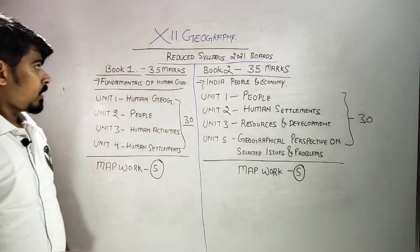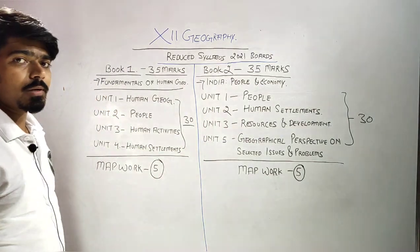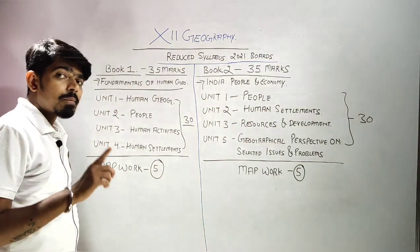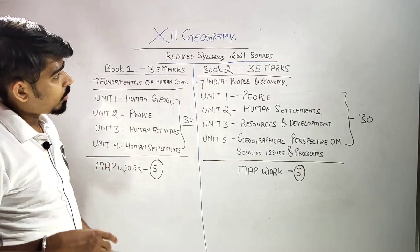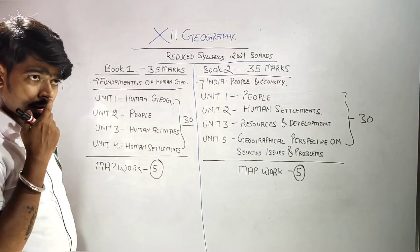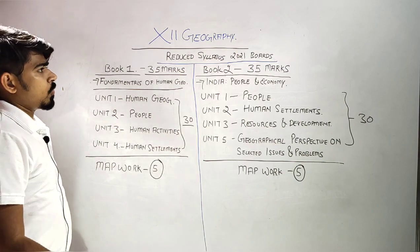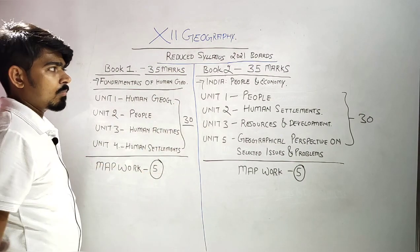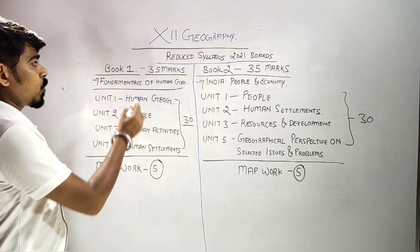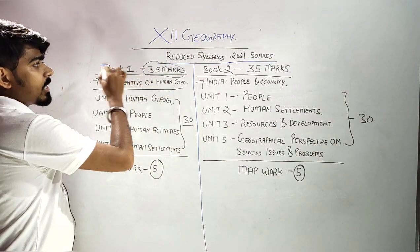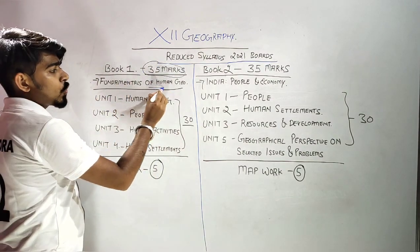प्यारे बच्चों, 12th Geography के reduce levels और paper pattern की बात करते हैं। Paper कैसा आएगा और reduce levels में आपको क्या-क्या पढ़ना है। तो बैटा, दो किताब हैं आपकी 12th Geography में। Book one 35 marks की है जिसका नाम है Fundamentals of Human Geography।